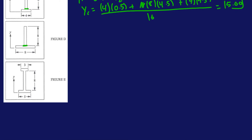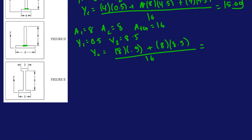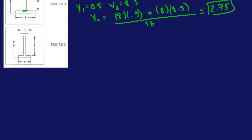For Figure D: A1 is 8 times 1, that's 8; A2 is 8; total is 16. Y1 is 4. Y2 is 8 plus a half, which is 8.5. Weighted average gives you 2.75. And that should give you 2.75. Let's do this one last time and then we can rank these in the correct order from least to greatest.